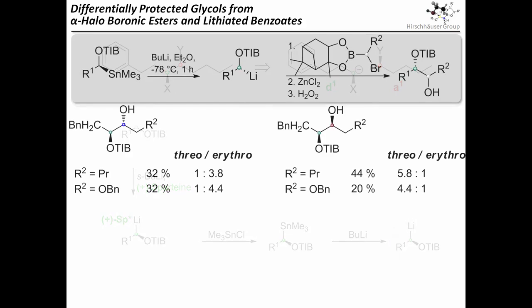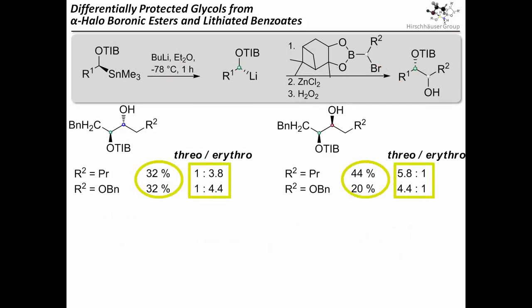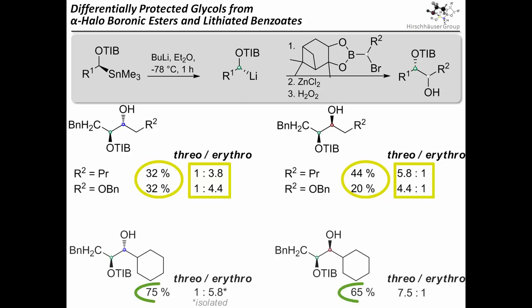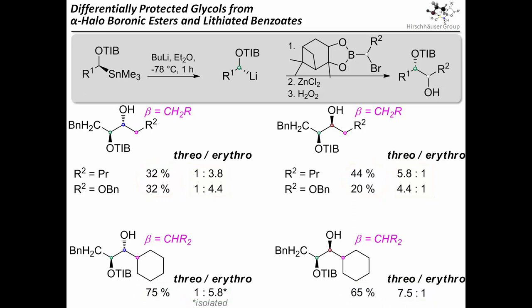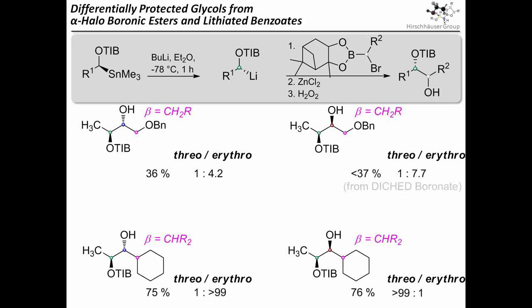Based on that, we tried several substrates and saw that the yields and dr values remained moderate for a certain class of alpha-haloboronates, while much better yields and dr values were obtained for another. The key difference was the carbon atom in the beta position: while the top systems had a secondary carbon atom in this position, the bottom system had a tertiary carbon atom. This also remained true when a less bulky chiral carbanion was used. So what could be the explanation of this trend?